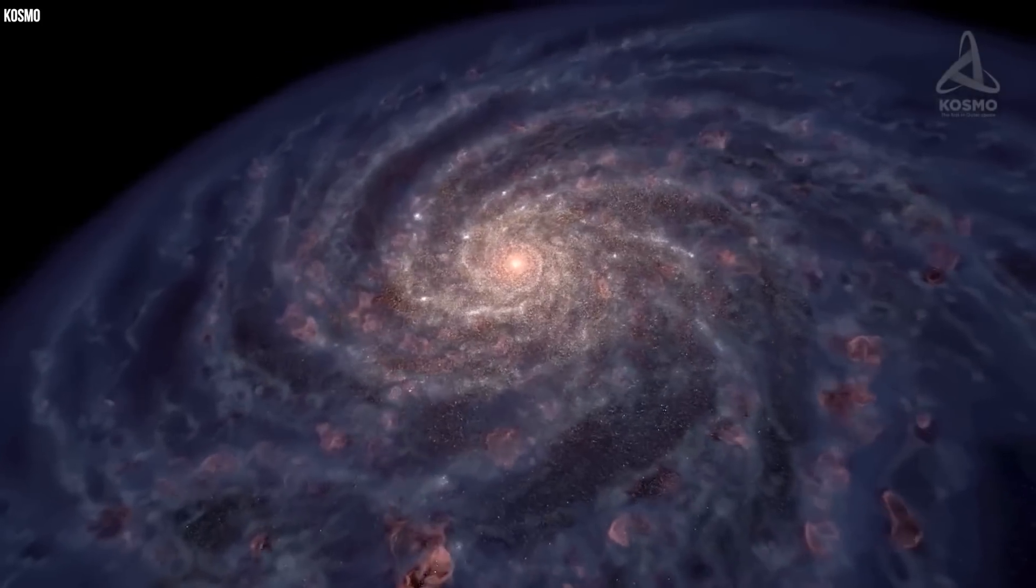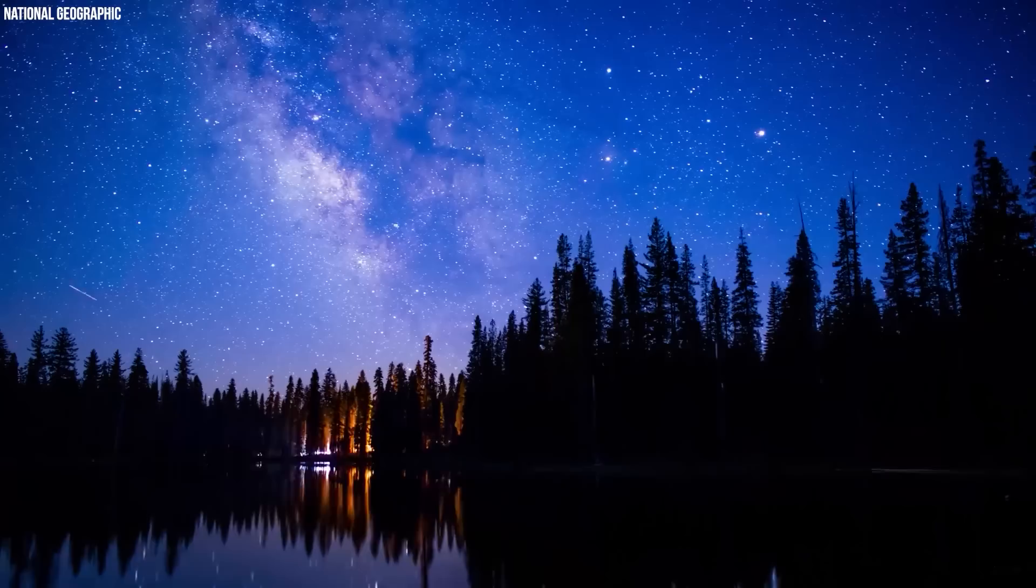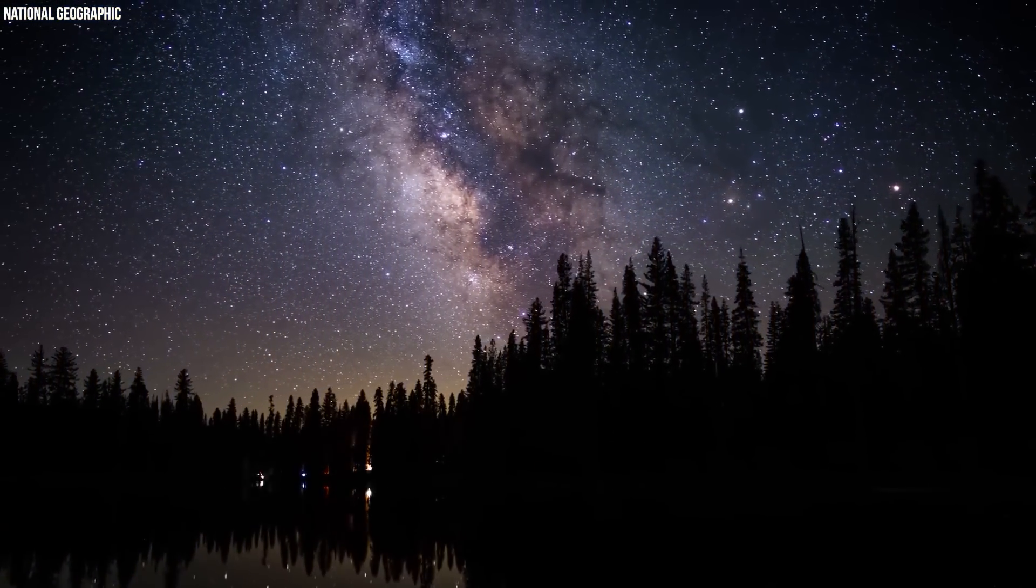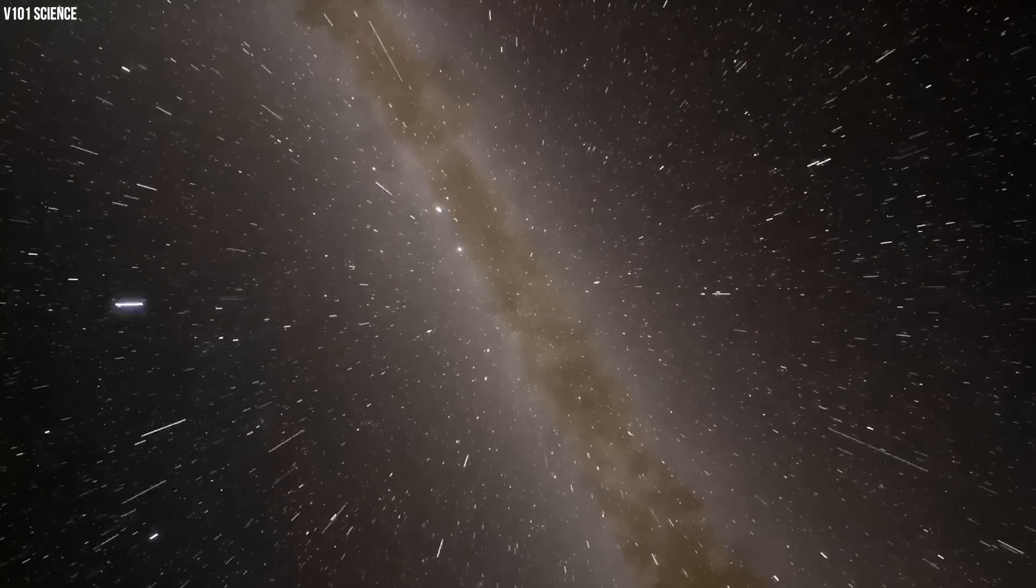Our solar system is part of the Milky Way galaxy. Its name describes the galaxy's appearance from the Earth. From our perspective, the Milky Way looks like a hazy band of light visible in the night's sky, and it seems to be made of stars that are indistinguishable by the naked eye.